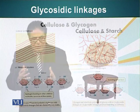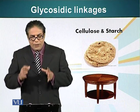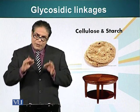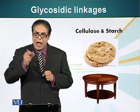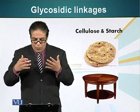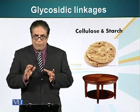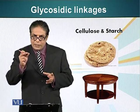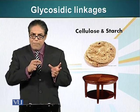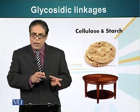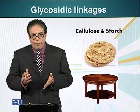Now let's look at the graphic difference. Next time when you see wood, you will realize that wood is made up of the same materials — the same subunits — as the roti you eat for lunch or dinner. The only difference is the type of bond between the two monomers: in wood it is beta-1,4, and in roti it is alpha-1,4.